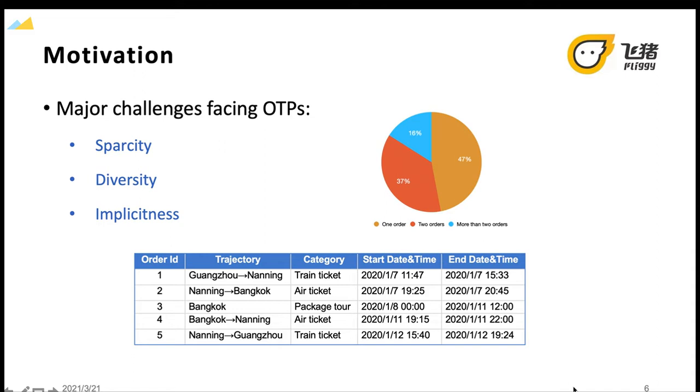Compared with other e-commerce platforms, for example Taobao in China, users' behavior collected at OTPs are more sparse because travel is usually an infrequent need for users. As shown in this table, when a user plans to travel,